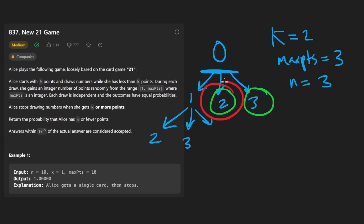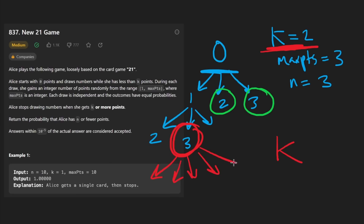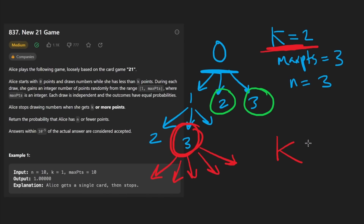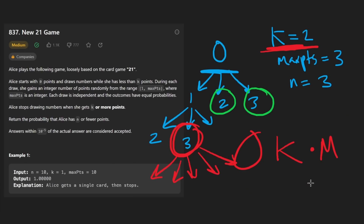The reason this is N squared is that for every single node - the base case stops at K, so we have up to K sub-problems - and for each sub-problem we have to loop up to max points number of times. So the time complexity is big O of K multiplied by max points. But we can get this down to just big O of K plus max points. Let me first show you this solution and then we'll optimize it.